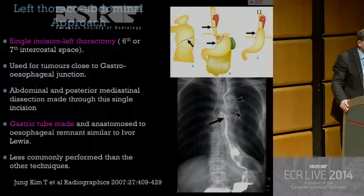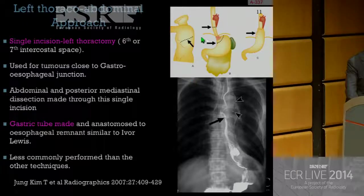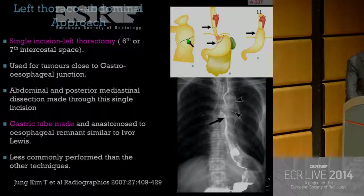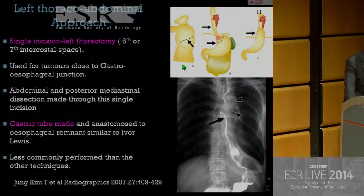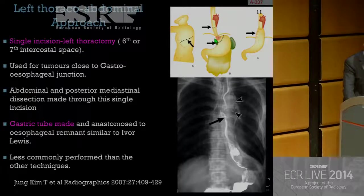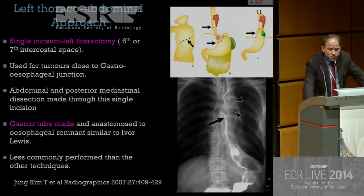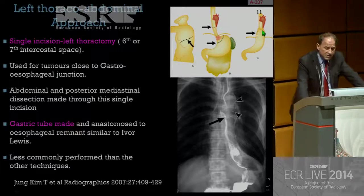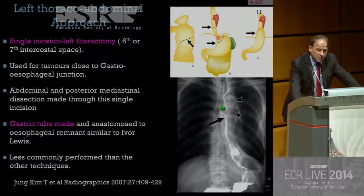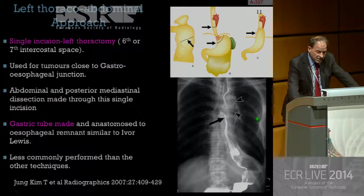The left thoracoabdominal approach is a less common procedure. There is only one incision — a left thoracotomy through the sixth or seventh intercostal space. It is usually done for lower esophageal tumors. Very similar in every other way: a gastric tube is formed following esophagectomy and the anastomosis is formed at the level of the aortic arch.